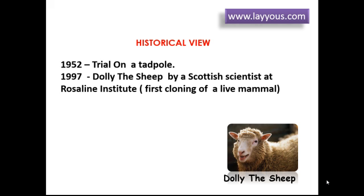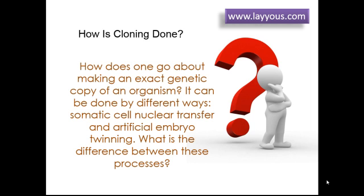How is cloning done? How does one go about making an exact genetic copy of an organism? It can be done by different ways: somatic cell nuclear transfer and artificial embryo twinning. Let's discuss each process.